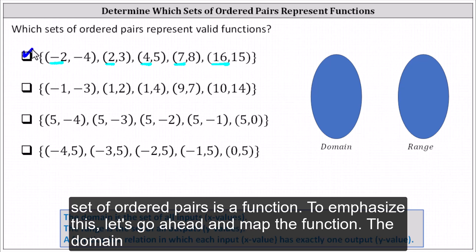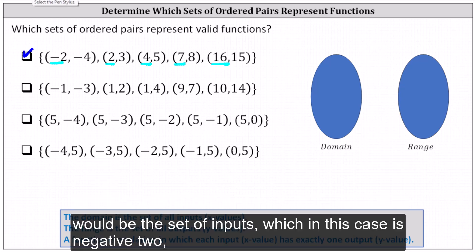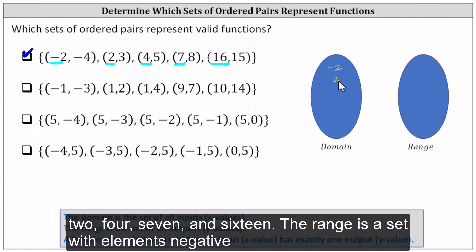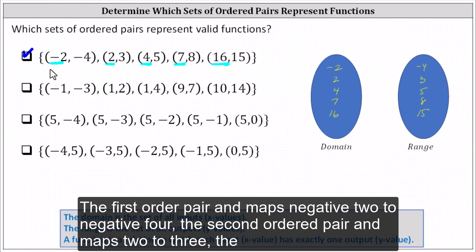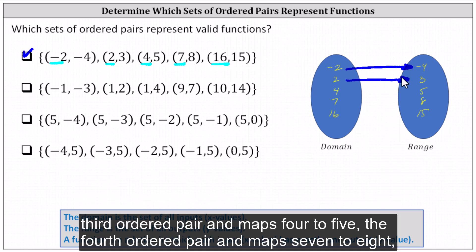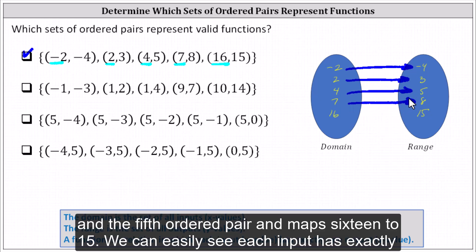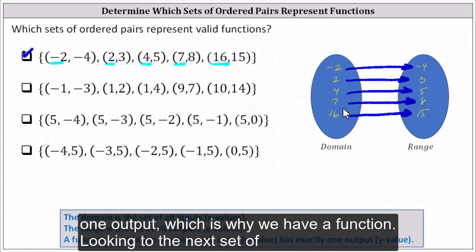To emphasize this, let's go ahead and map the function. The domain would be the set of inputs, which in this case is negative two, two, four, seven, and 16. The range is the set with elements negative four, three, five, eight, and 15. The first ordered pair maps negative two to negative four, the second maps two to three, the third maps four to five, the fourth maps seven to eight, and the fifth maps 16 to 15. We can easily see each input has exactly one output, which is why we have a function.